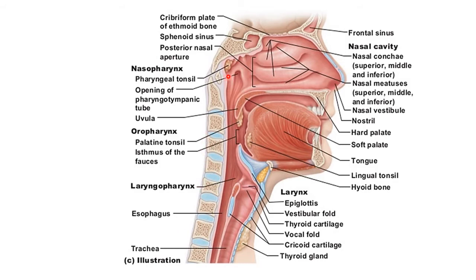The nasopharyngeal tonsil is a collection of lymphoid tissue beneath the mucous membrane at the junction of the roof with the posterior wall. A fold of mucous membrane extends upward into the substance of the nasopharyngeal tonsil. This fold is called the pouch of Luschka, also called the nasopharyngeal bursa.